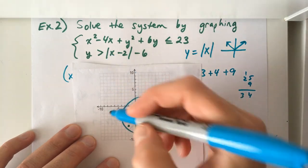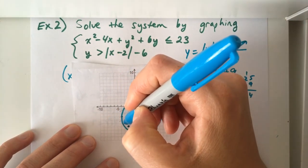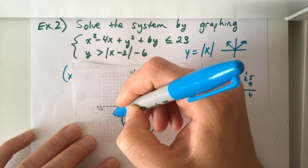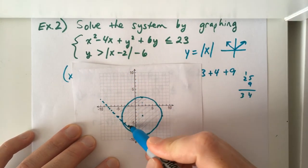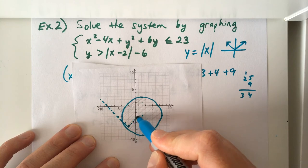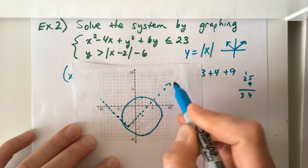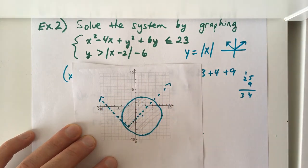And the slope is still 1, so it's still going to have that v-shape. And we're going to use a dotted line to graph that absolute value function.